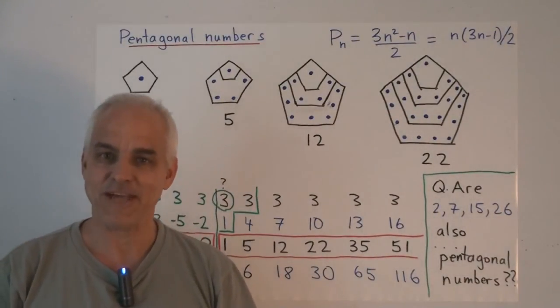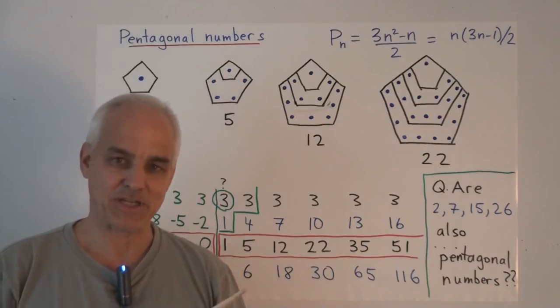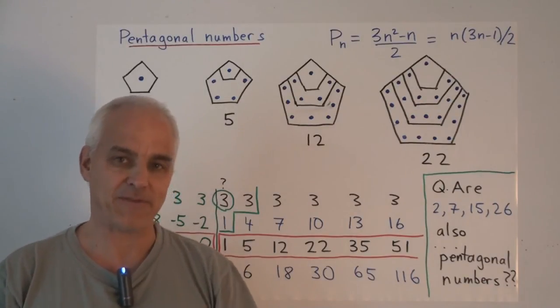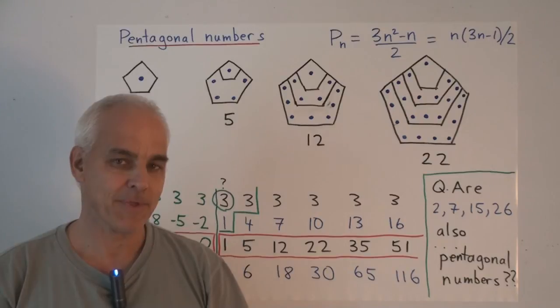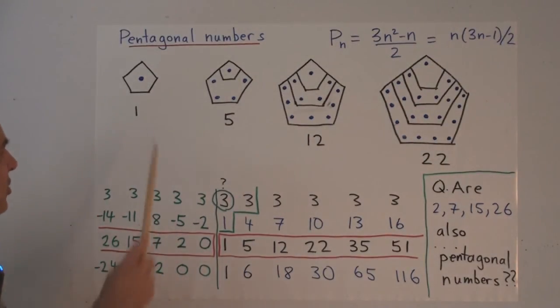It's not at all so obvious how to define pentagonal numbers. Especially since fitting cannonballs around in layers of 5 doesn't work very well. But here is one natural approach that's been studied for a long time. We start with a pentagon, with 1 cannonball right in the middle.